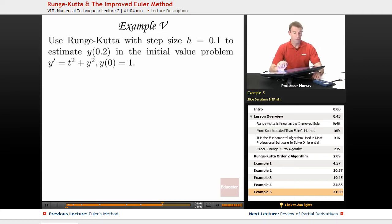In Example 5, we're going to use Runge-Kutta with step size h equals 0.1 to estimate y of 0.2 in the initial value problem y prime is equal to t squared plus y squared, and y of 0 is equal to 1.